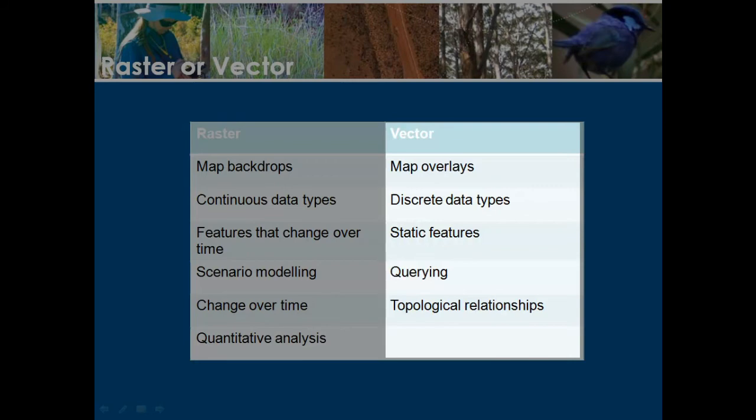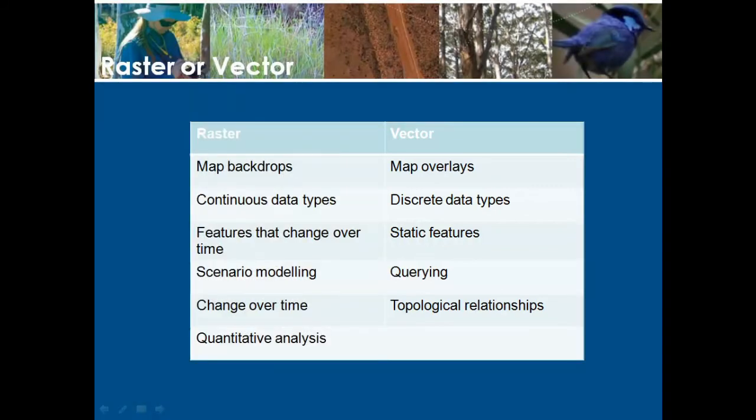For a GIS analyst, topology is also about looking at the quality of spatial data. In order to do analyses, you need to look at whether the data you're using has things like gaps and overlaps, and by cleaning this information, you're ensuring that you will get accurate results. GIS software like QGIS contains a number of topological tools that can help you diagnose and correct these sorts of errors in your data.